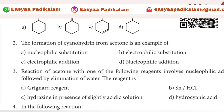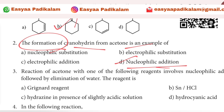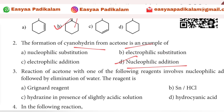Second question: the formation of cyanohydrin from acetone is an example of nucleophilic addition. You can see the addition of the formation — it will be a common addition from all the products. You need to identify the addition of this formation. So the answer is nucleophilic addition.